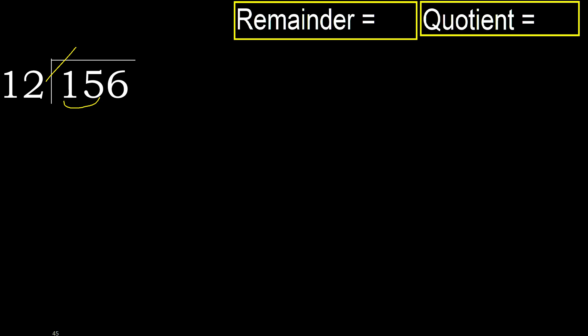But not greater. 12 multiplied by 2 is 24, which is greater. Multiplied by 1 is 12, not greater. Ok, subtract 15 minus 12 equals 3. Next.